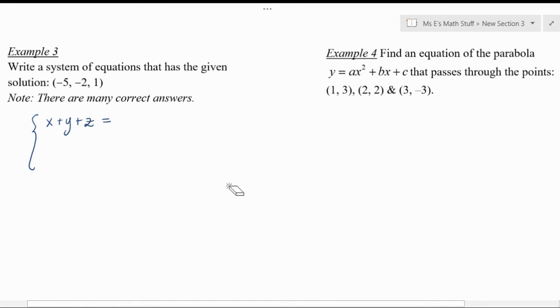So if negative five, negative two, one is a solution to this equation, that would mean negative five plus negative two plus one would have to be the answer that you have on the right side. So what is that? I think that's negative six. So there you go, I've got one equation down and then I just need to do two more.